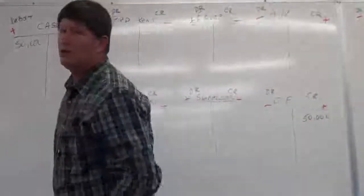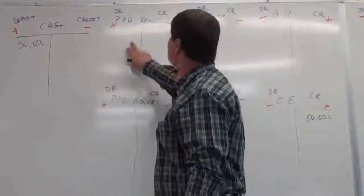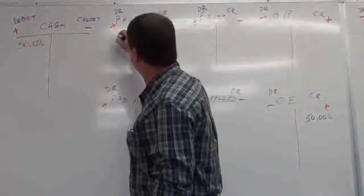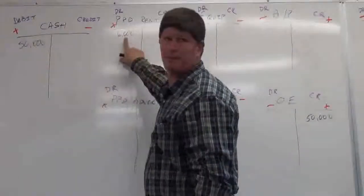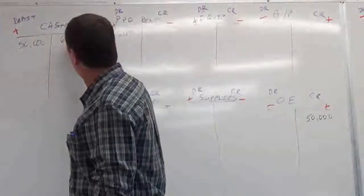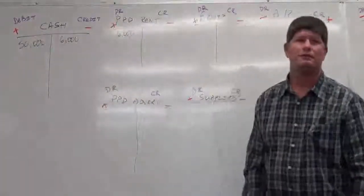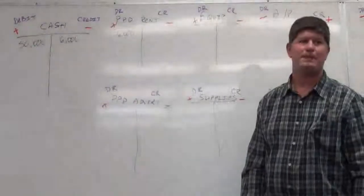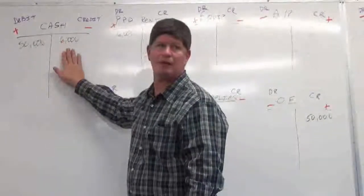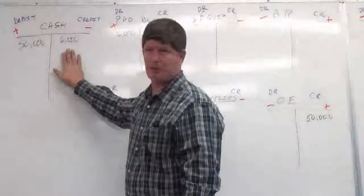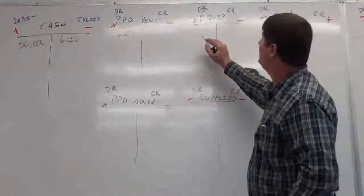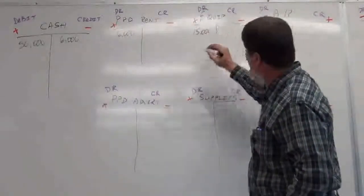Transaction 2: we prepaid some rent. Our asset prepaid rent goes up — that's a debit. Cash: we had to give up cash to get it, so cash goes down — credit. Notice I did not list it as a negative; it's simply a credit. To find out the balance in this account, you add up all your debits, subtract all your credits, and you get your ending balance.